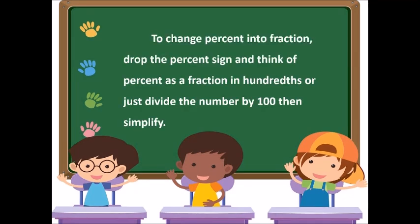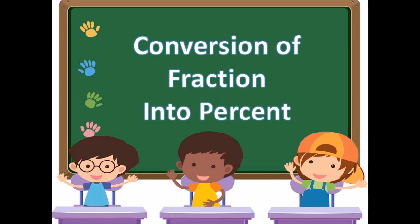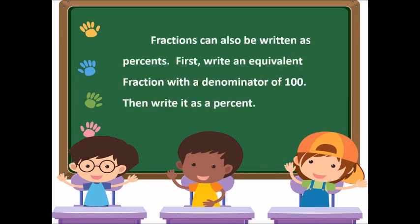To change a percent into a fraction, drop the percent sign and think of the percent as a fraction in hundredths, or just divide the number by 100 and then simplify. Fractions can also be written as percents. First, write an equivalent fraction with a denominator of 100, then write it as a percent.